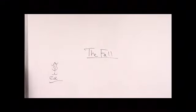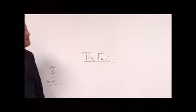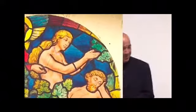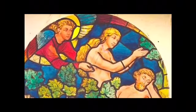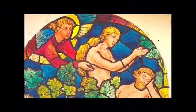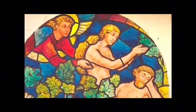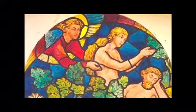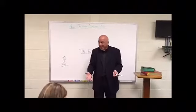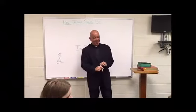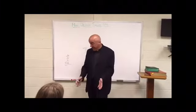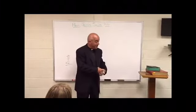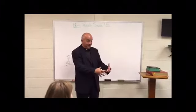Does anybody know where Eve comes from? In the book of Genesis, it says that God made Eve from the side of Adam, so she would be a suitable partner for him. The rib of Adam — she was made out of Adam's rib. God made Adam first, then he put him to sleep and took the rib and made Eve.